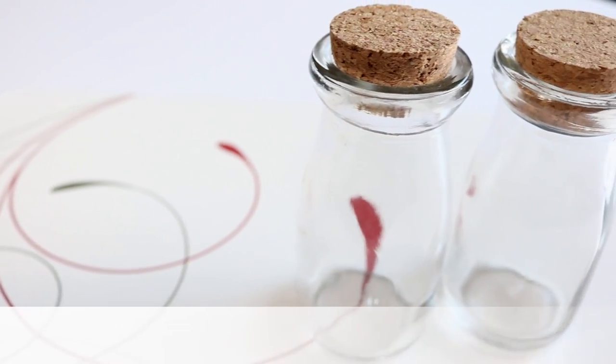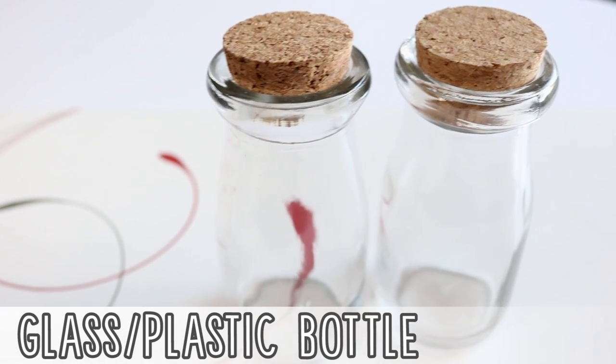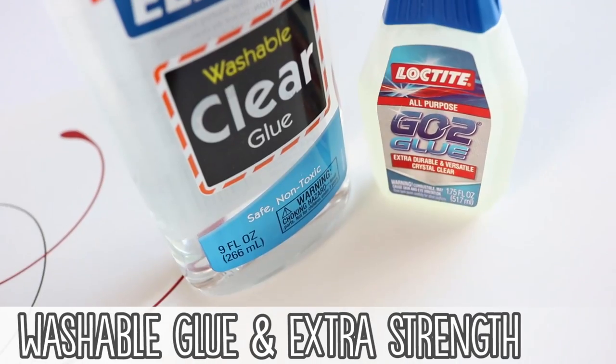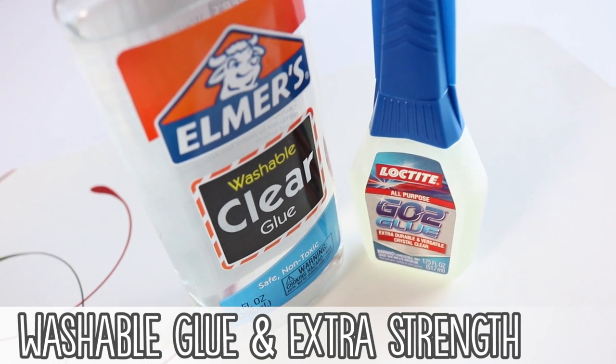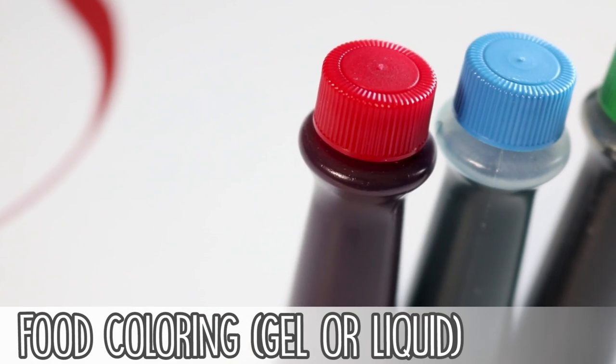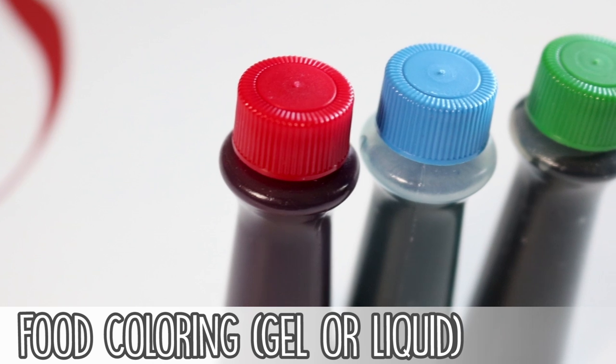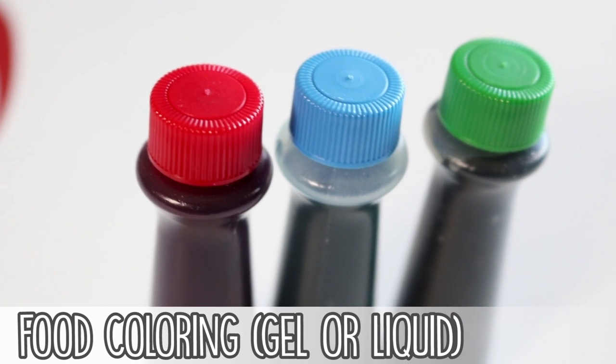For your materials you'll need a glass or plastic bottle with a cork top, clear washable glue and clear extra strength glue, food coloring in the color you want your potion to be. These can also be mixed to create custom colors.